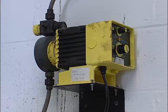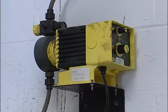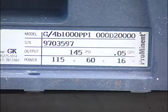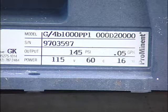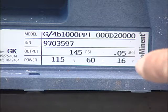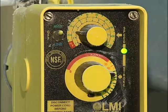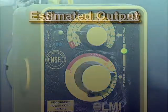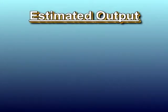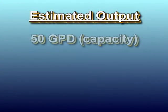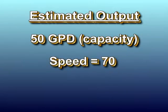Assuming that you have purchased the right pump for the job does not mean you can just plug it in and watch it work. Some pump manufacturers suggest that the output of a pump can be estimated by multiplying the rated capacity of the pump by the speed setting and the stroke setting. For example, if a pump is rated at 50 gallons per day maximum and the speed is set at 70 percent and the stroke is set at 75 percent...